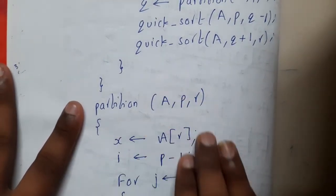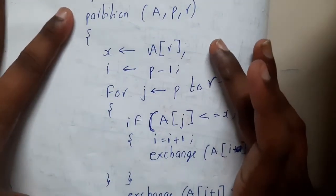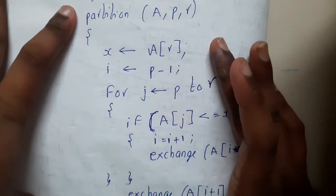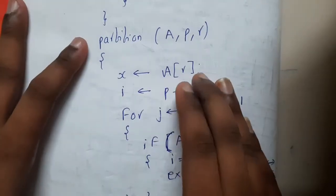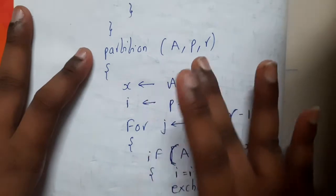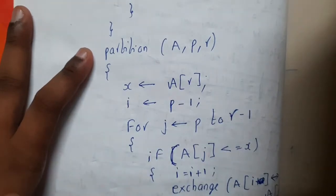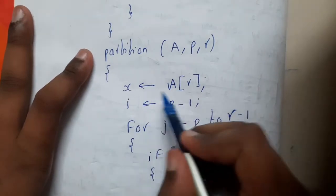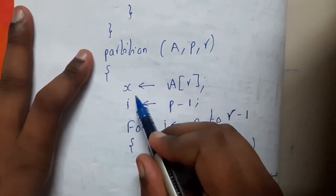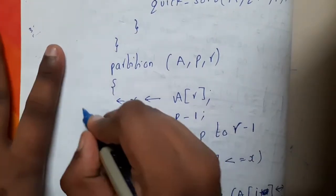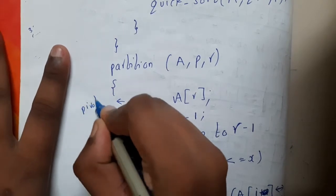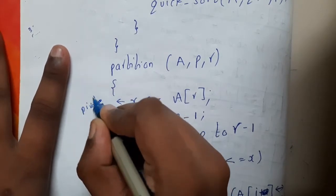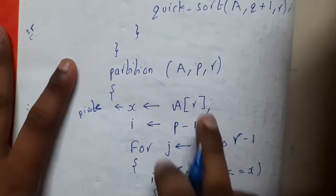The whole logic is in just five to six lines of code. There is nothing much to write, but the only thing you should learn is to understand how it is running. If you get the grip or idea on that, quicksort is a piece of cake. Initially you will be assuming the last element as x, which is nothing but the pivot.